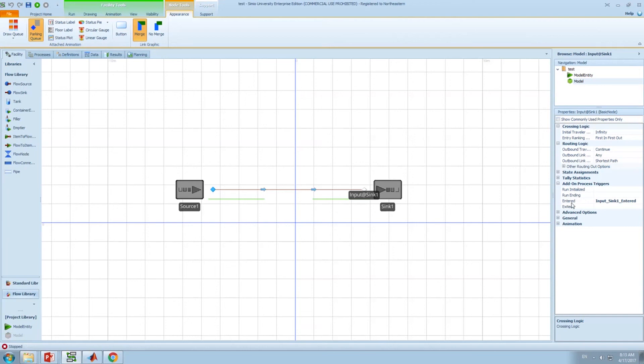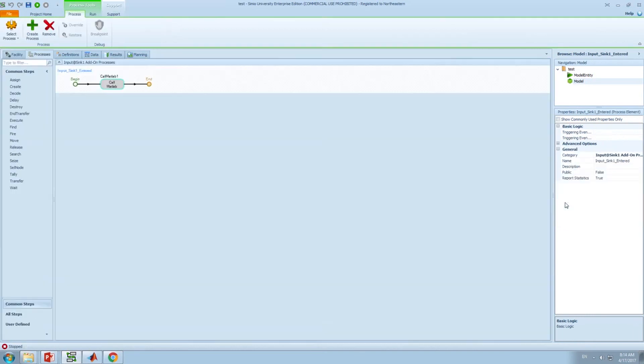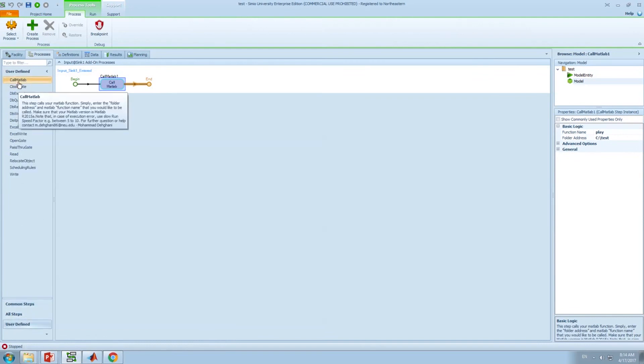So, I create a process called input underscore sync1 underscore entered, because I want to call MATLAB whenever an entity enters here, and therefore play the ship sound from MATLAB. I go ahead and click on it. You can see that I have a very simple process, which would have just a single step, which is labeled call MATLAB. How can I get this step? So, if you go to User Defined, you can see a new step is added to Simio as call MATLAB. You will get this one once you copy the file to the Simio directory.